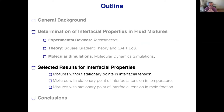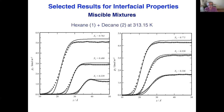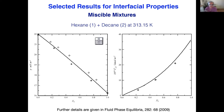One of the first examples is mixtures without a stationary point in interfacial tension. In this figure, we can see the concentration profile for hexane plus decane, and we see very good agreement between experimental data, simulation, and theoretical prediction. As the mole fraction increases, the interfacial tension decreases. This information is also compared with experimental data and molecular dynamics simulation, with very nice agreement. We can also observe the Gibbs adsorption behavior.